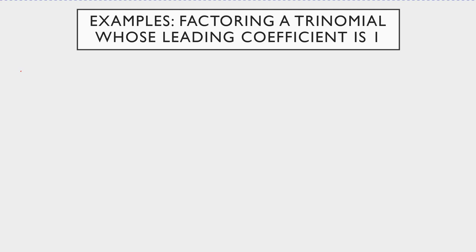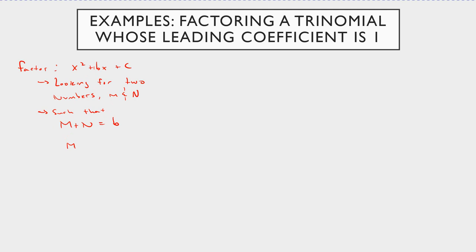This is also called factoring a trinomial whose leading coefficient is 1 — you're factoring x squared plus bx plus c. The number game is this: you're looking for two numbers, m and n, such that when you add them together they equal b, and when you multiply them they equal c, the constant term.